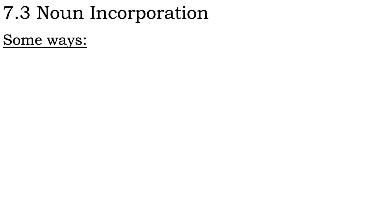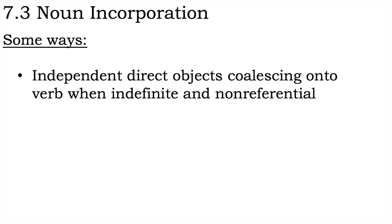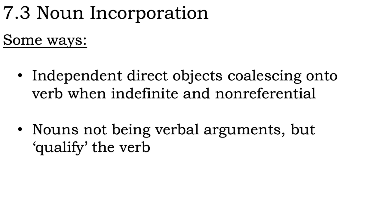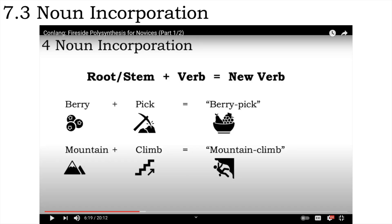Thus, we can see here several steps in the development of noun incorporation, from independent direct objects coalescing with a verb when they are indefinite and non-referential, to such nouns ceasing to be verbal arguments at all and becoming qualifiers of the verb. From here, we simply need phonological fusion of the verb and noun to have classic compounding and noun incorporation of the kind described in section 4 of the previous video, Fireside Polysynthesis for Novices, Part 1 of 2.